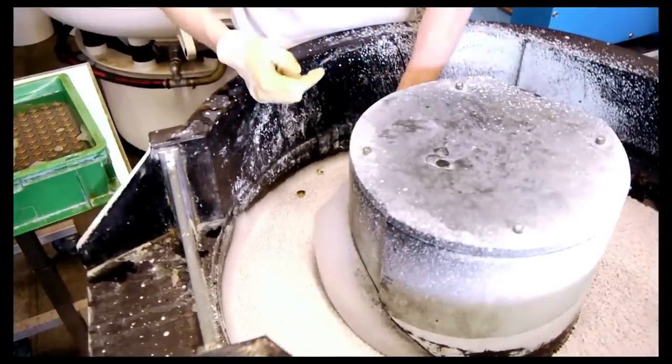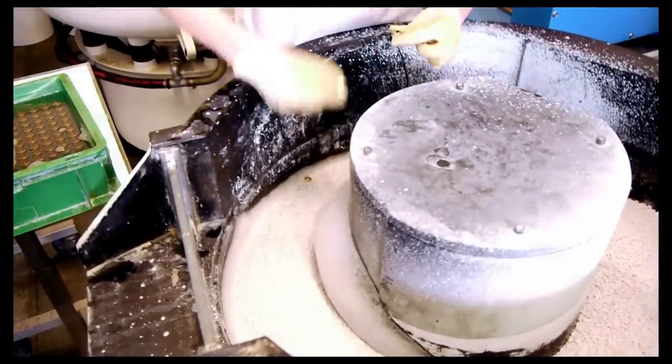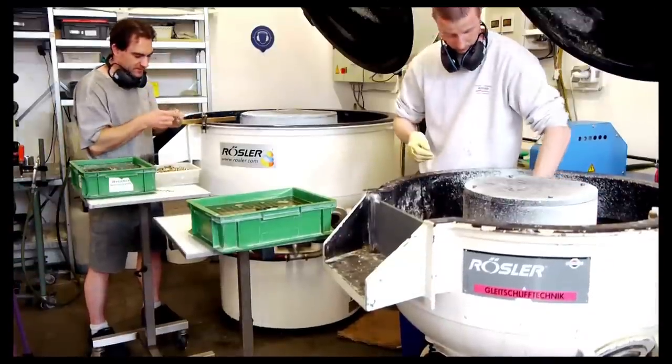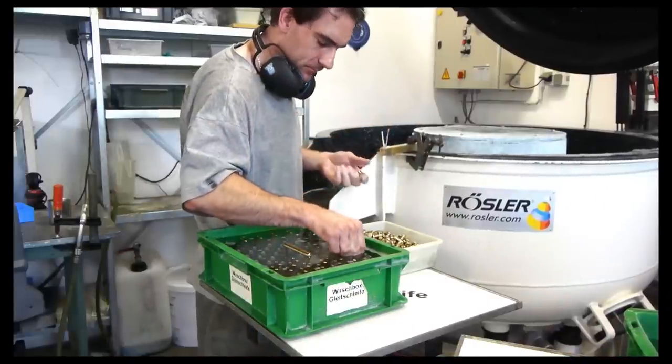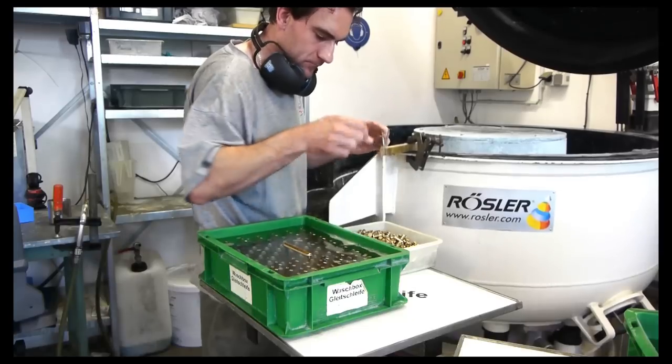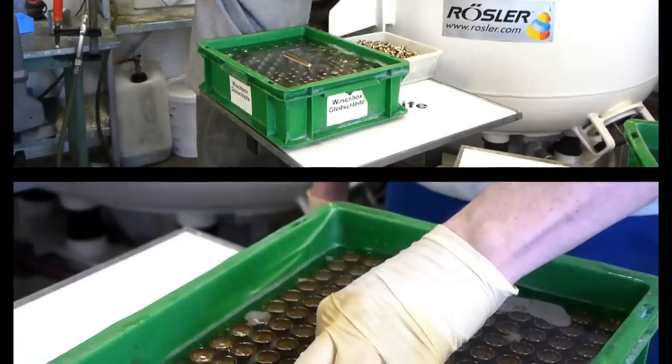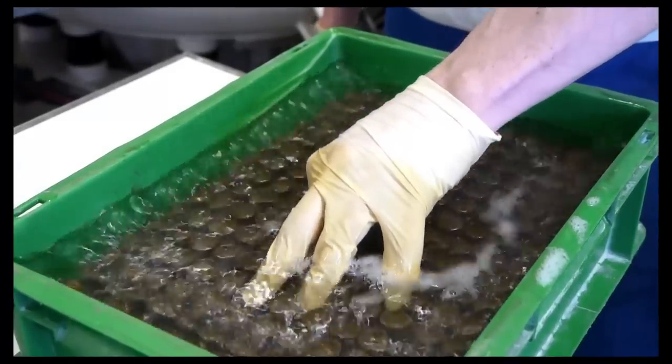Fresh off the CNC machine, all raw components are washed and freed from oil residues. Then the parts are ground with a ceramic granulate in a mass-finishing machine until they are bright and shiny. Only the most sensitive parts, such as pins or nozzles, are not ground.